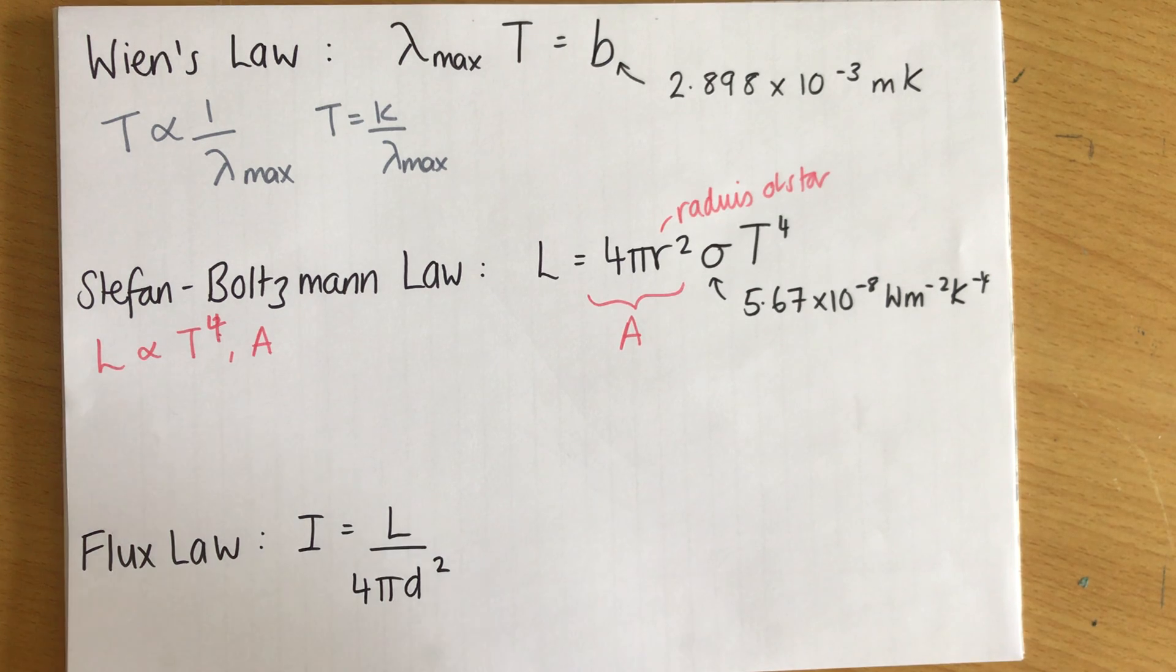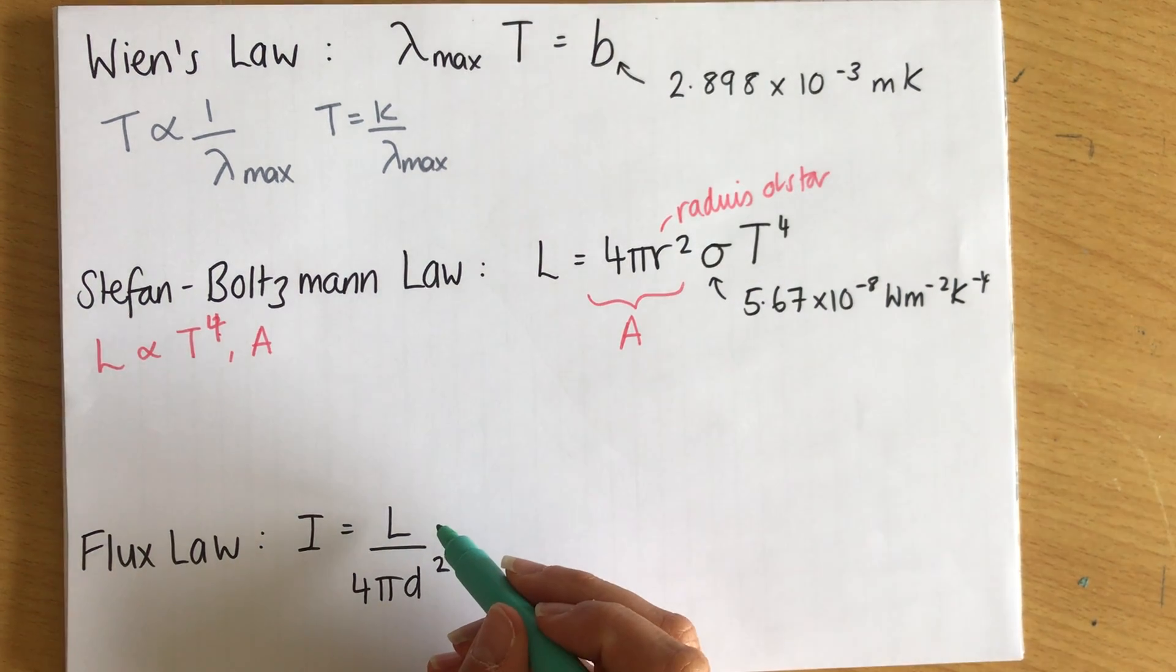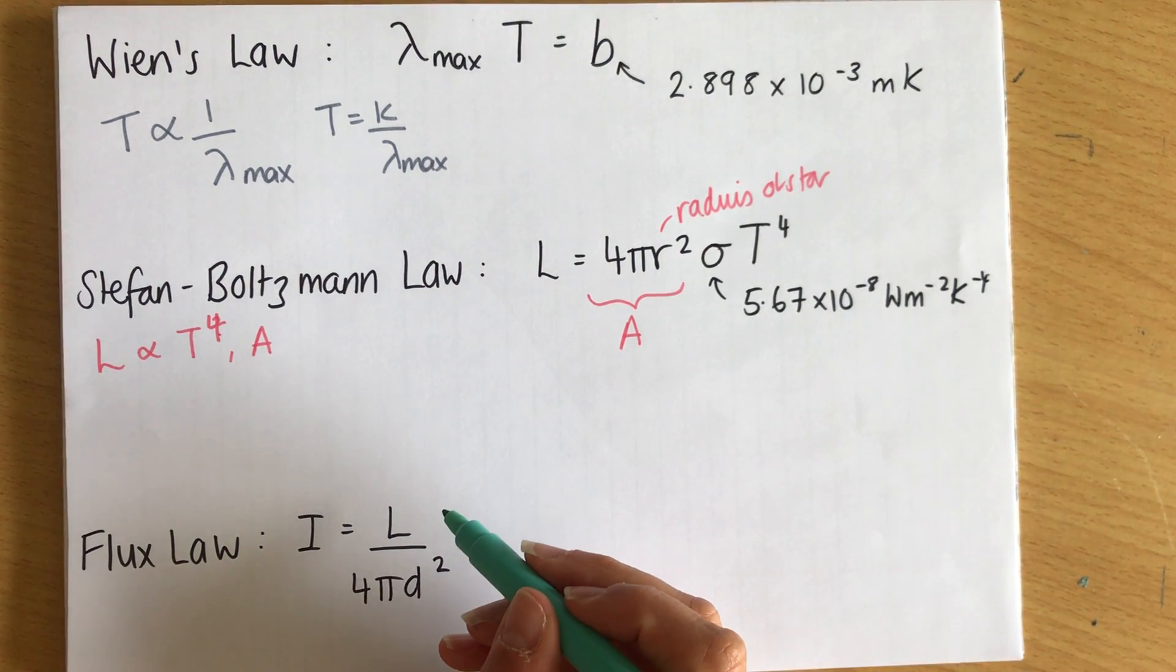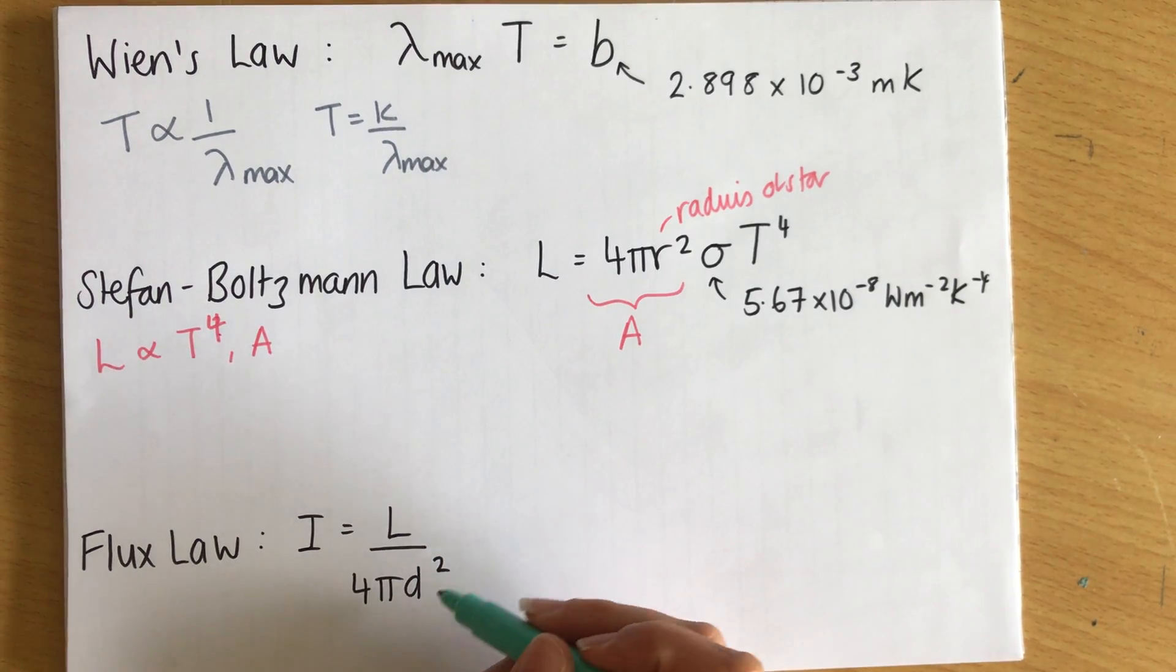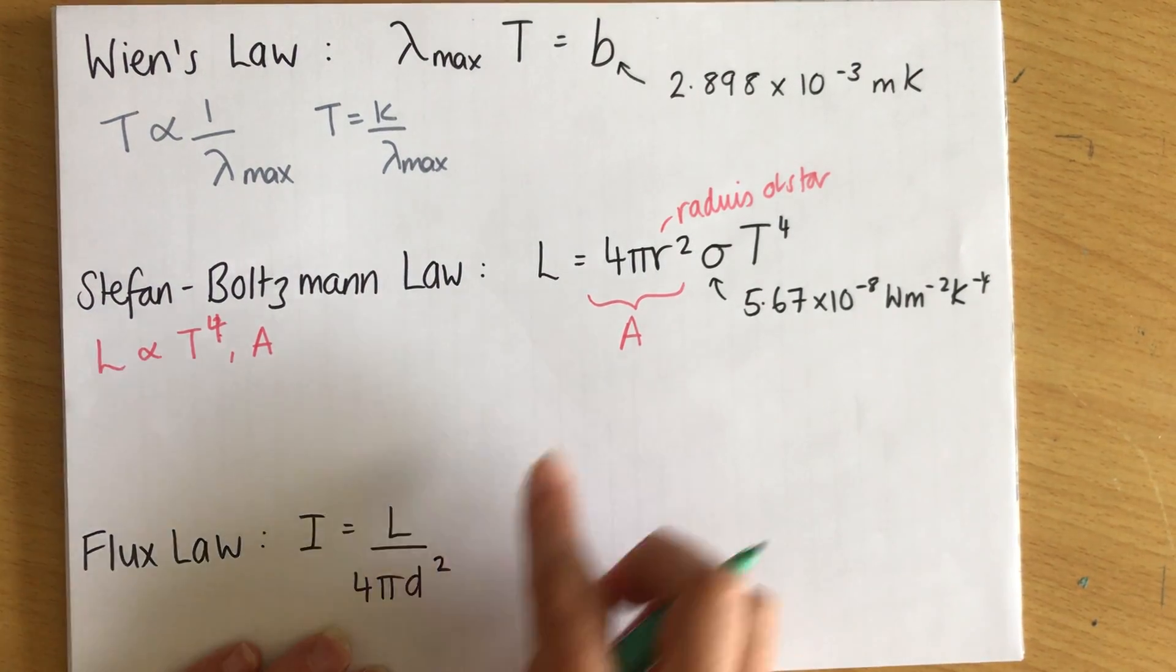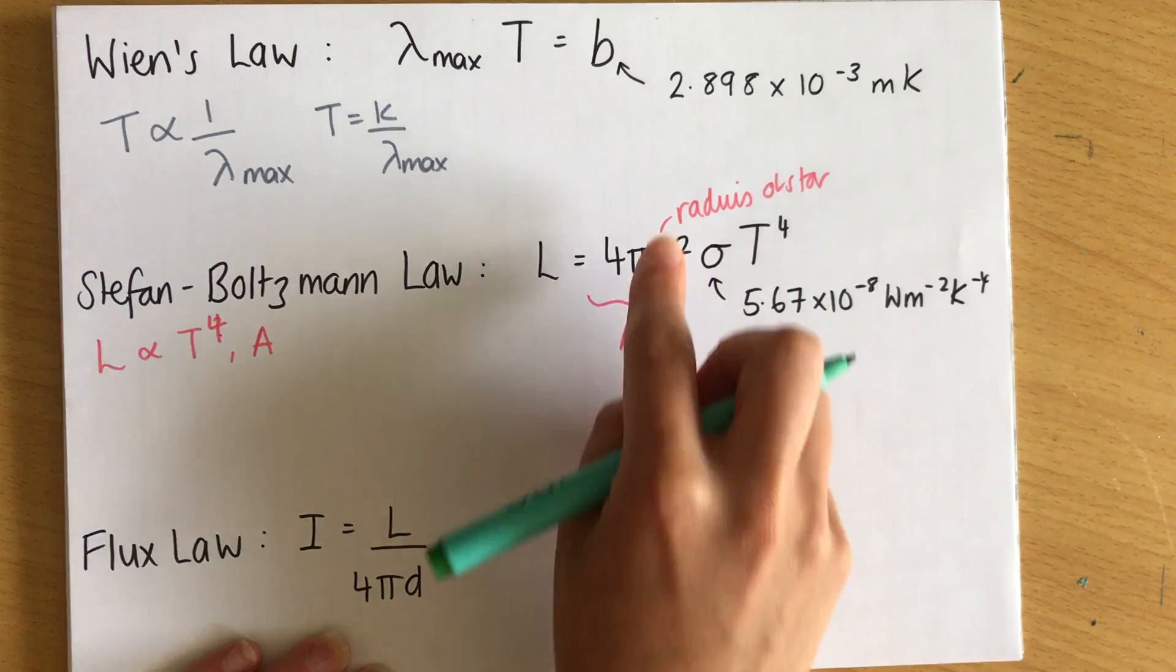It's equal to its luminosity, its actual brightness as it is, divided by 4 pi d squared. Now here, you'll notice it's the same thing. We've got the area of a sphere, the area of a sphere. The r here is the radius of the star.